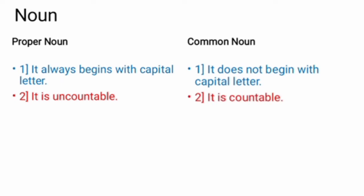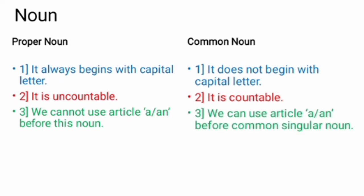Common noun is countable. And that's why, it can be divided into two forms. Singular and plural. Number three, we cannot use article a or an before this noun. Whereas, we can use article a or an before common singular noun.